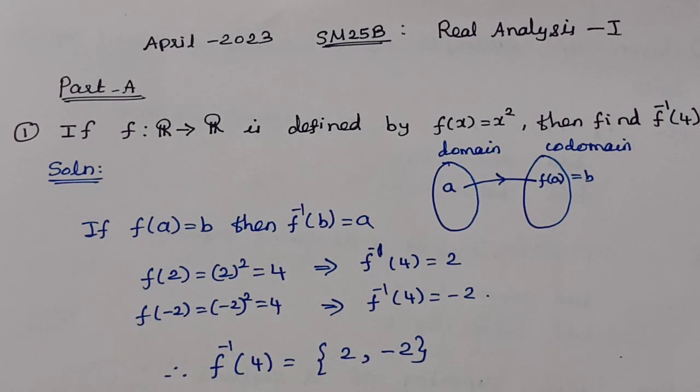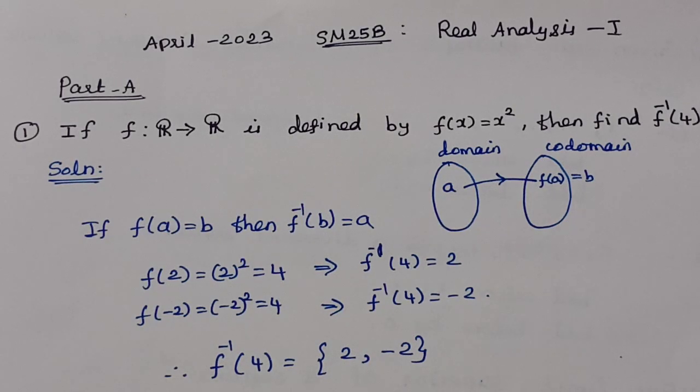First question: if f from ℝ to ℝ is defined by f(x) = x², then find f⁻¹(4). We need to find the inverse image.